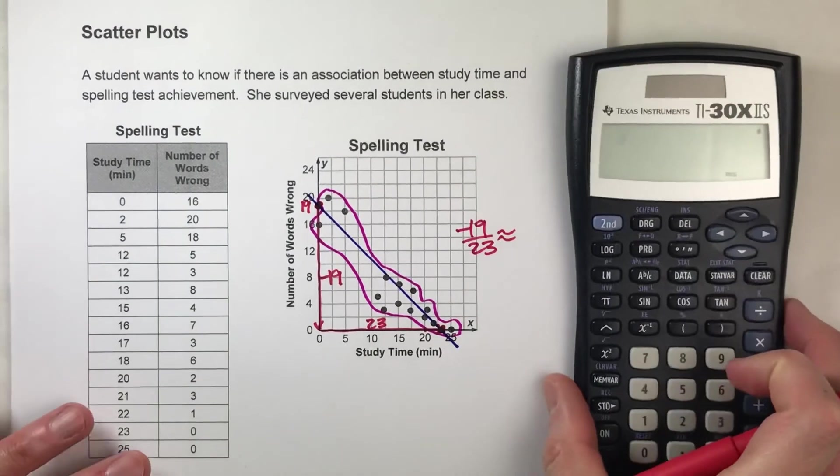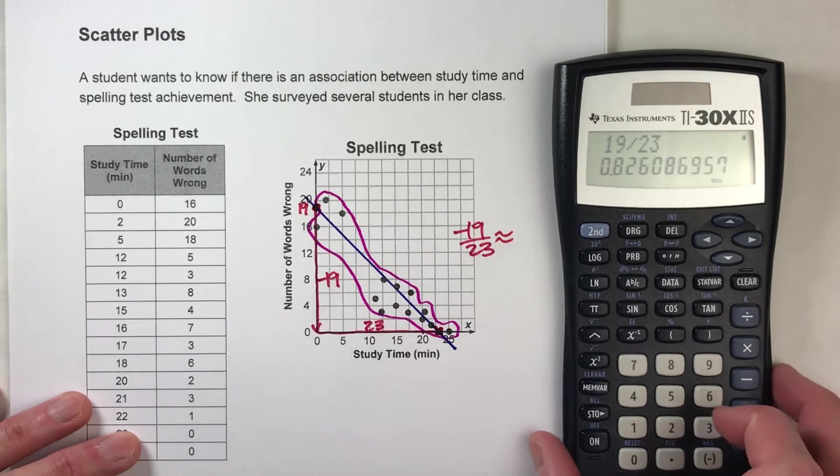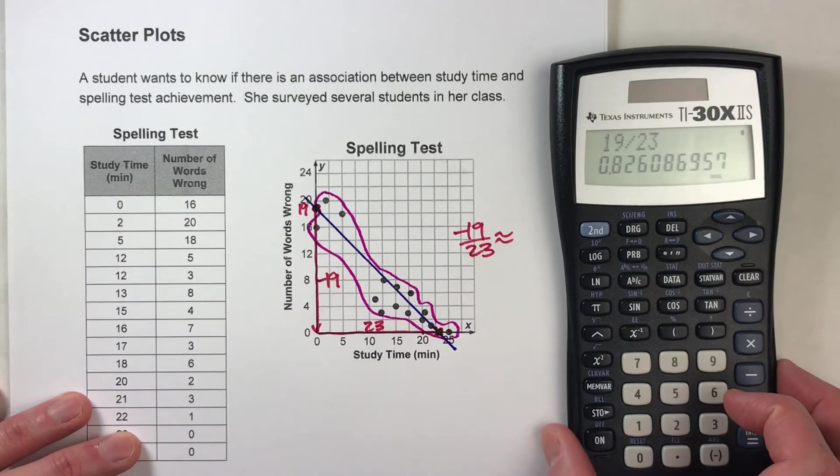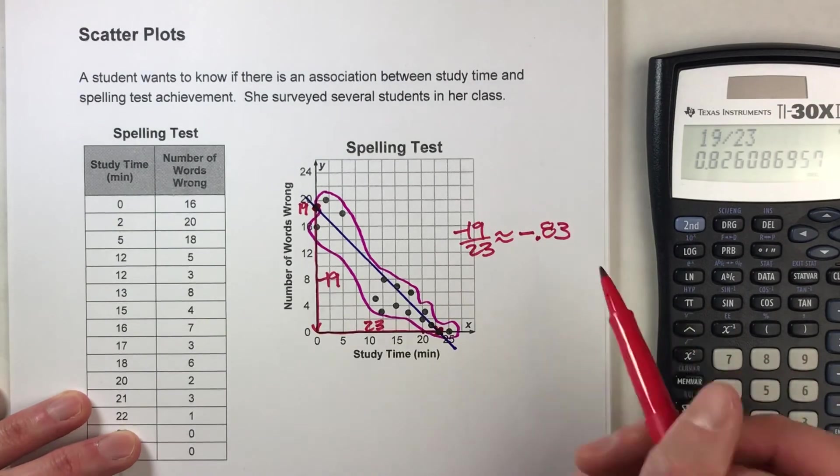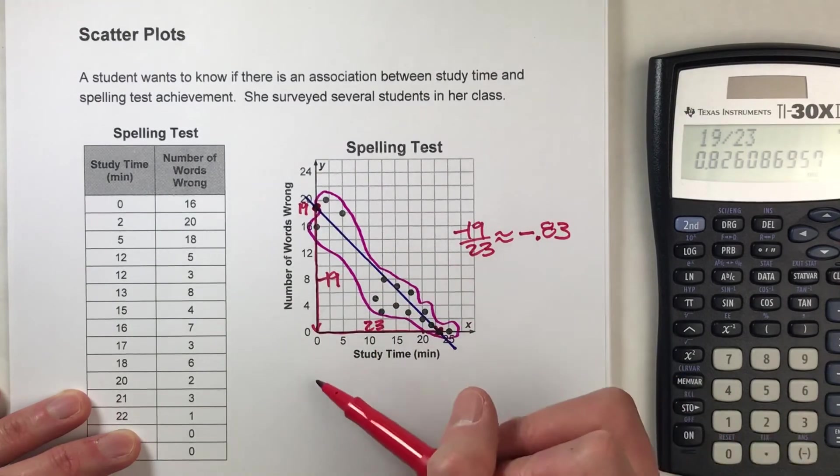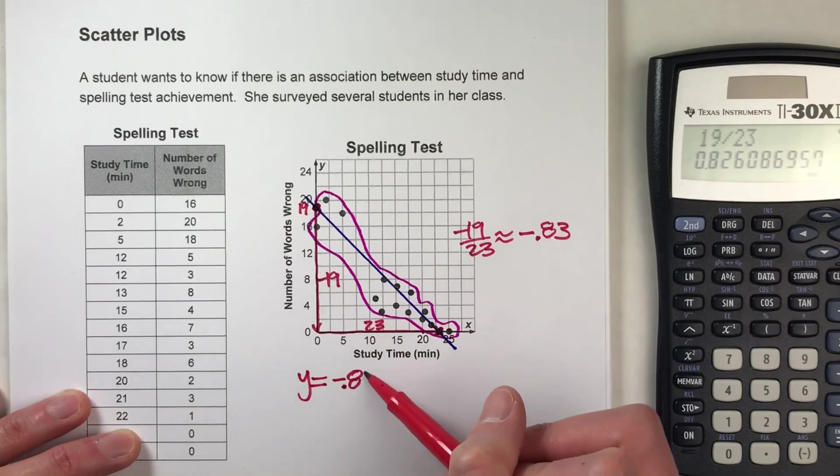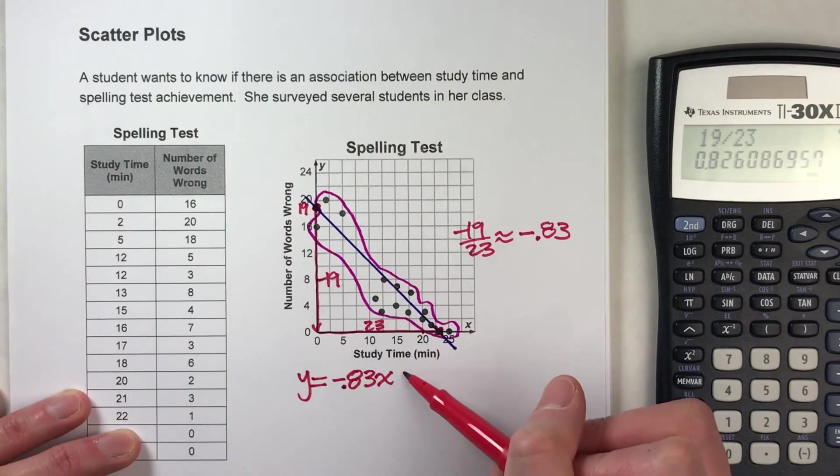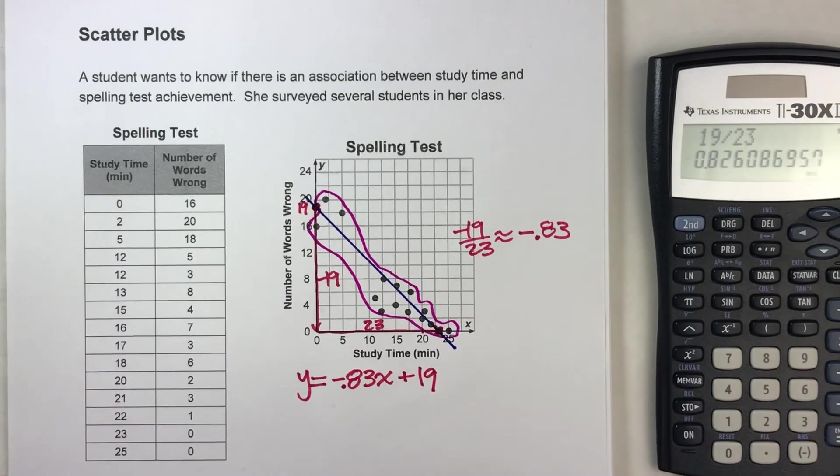So my slope would be negative 19 over 23, which on my calculator, 19 divided by 23 is about 0.83. So this is going to be negative 0.83 approximately. So now that I know my y-intercept and my slope, I can write an equation for this trend line: y equals negative 0.83x plus my y-intercept 19.